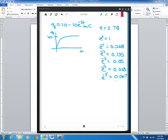And I only went down to e to the minus 5, which is really small, 0.007. So it should make sense to you that the curve would look like this because at t equal to 0, you'd have e to the 0, which is 1, so 10 times 1. So you've got 10 minus 10, which is 0.